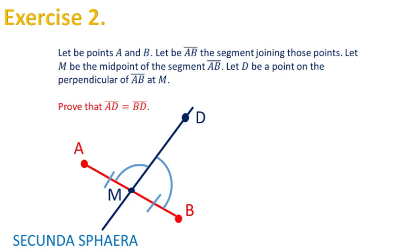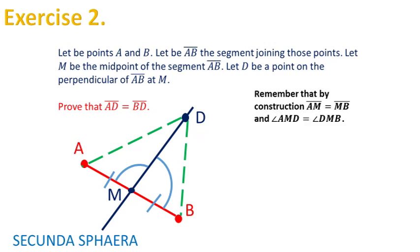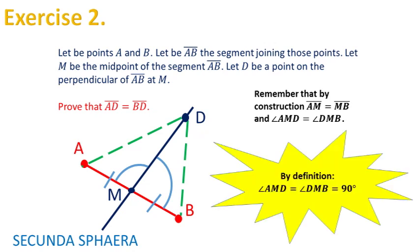We are going to draw green segmented lines for the segments AD and BD. For solving the problem we need to conclude that the segments AD and BD are equal. Here I'm going to give you an important comment. Given that MD is perpendicular to AB, the adjacent angles AMD and DMB are equal and right. It is later on by the convention of degrees that those angles are going to be equal to 90 degrees.